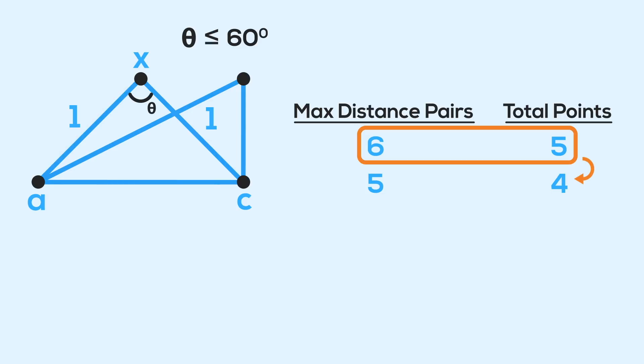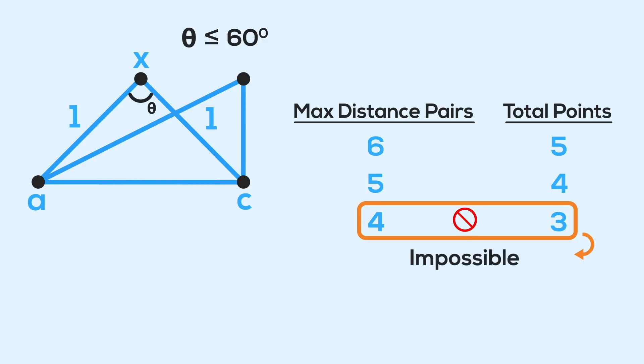And by applying that same logic, you can continue to go down over and over to the case of N equals three. But we already saw that that was trivially true with no counterexample. You can't have four or more pairs at all with just three points.